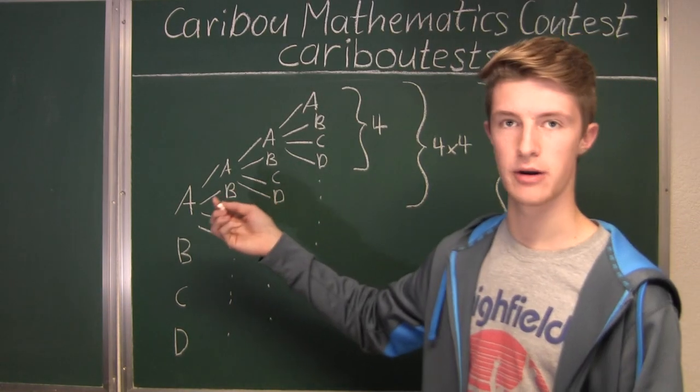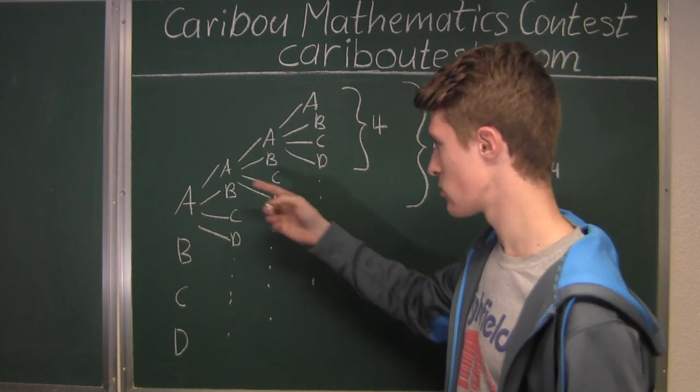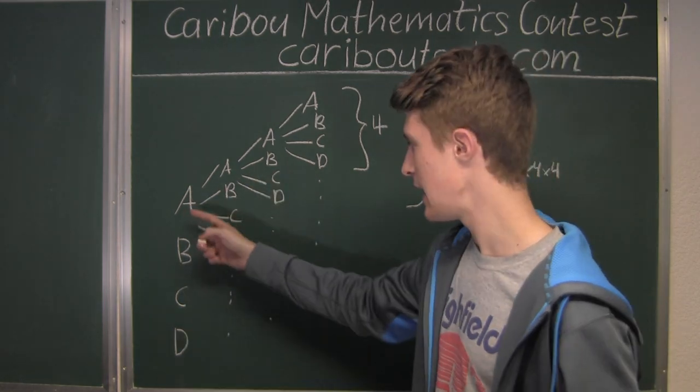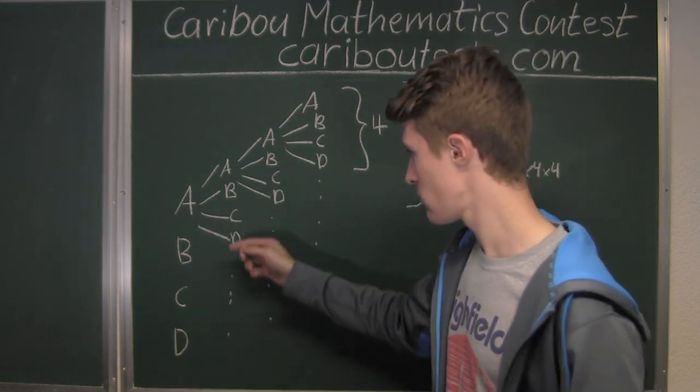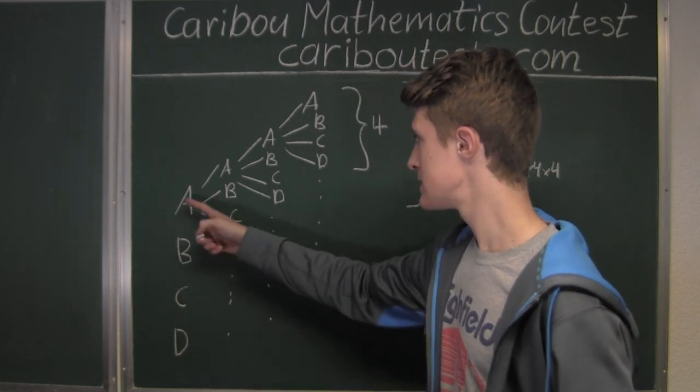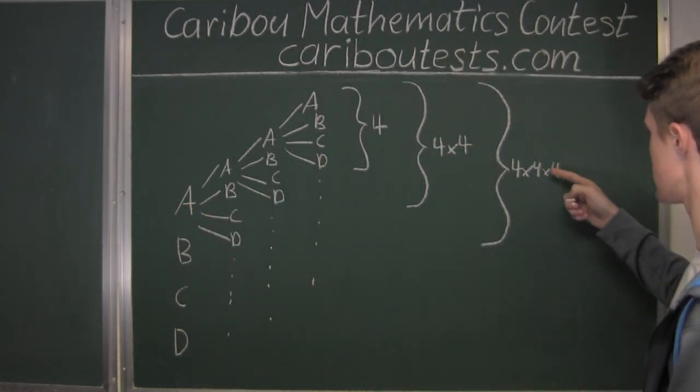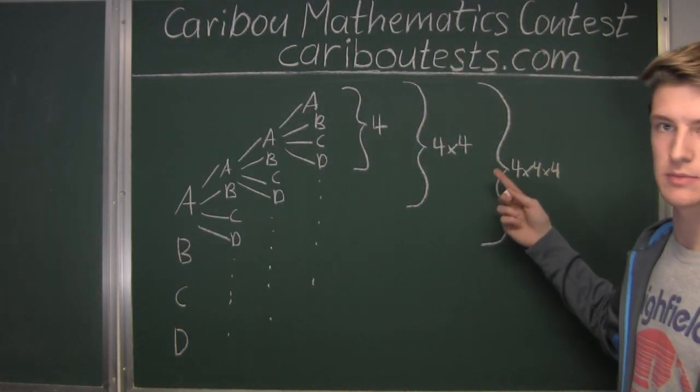And now, covering all combinations of four-letter words, starting with either A, B, C, or D, we would have one, two, three, four times this number here, which is then just four times four times four times four.